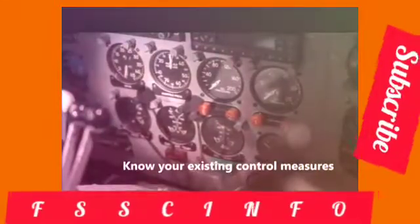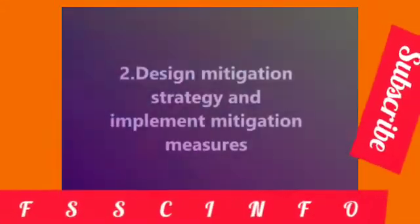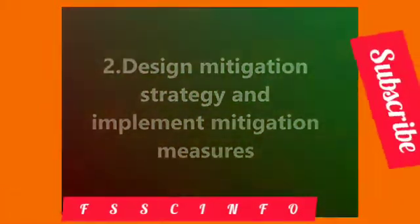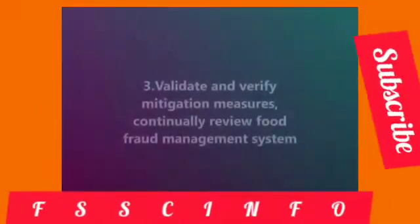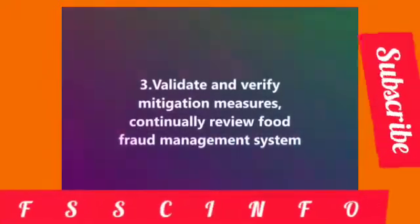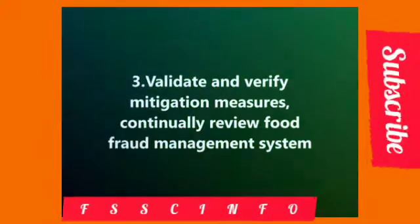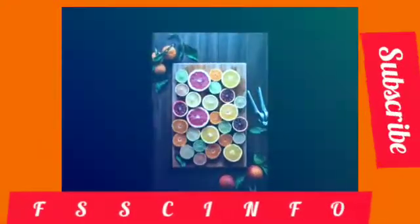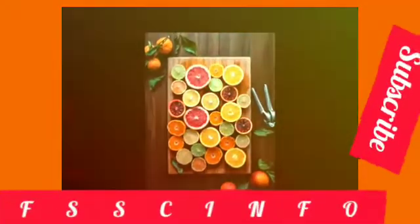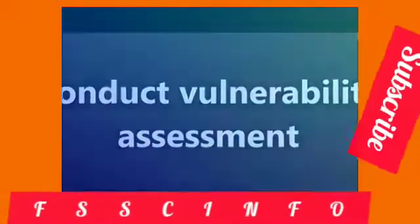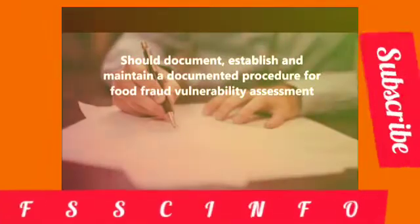Also, know your existing control measures. Two: design mitigation strategy and implement mitigation measures. Three: validate and verify mitigation measures and continually review the food fraud management system. Now let's see each step in detail. One: conduct vulnerability assessment — the organization should document, establish, and maintain a documented procedure for food fraud vulnerability assessment.